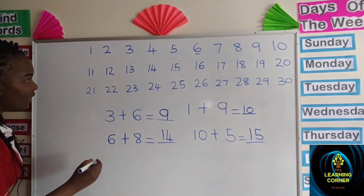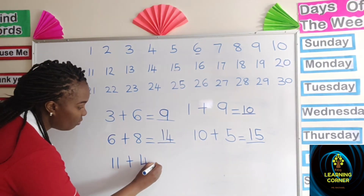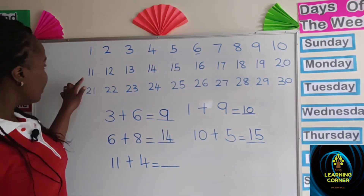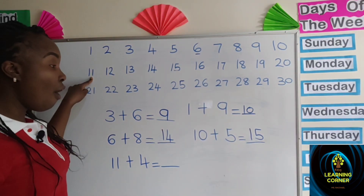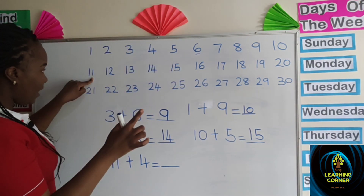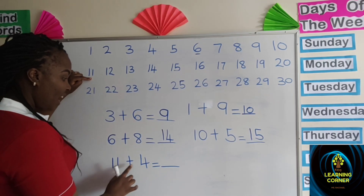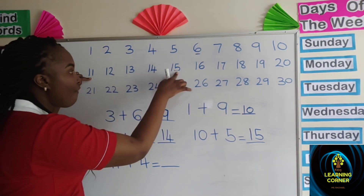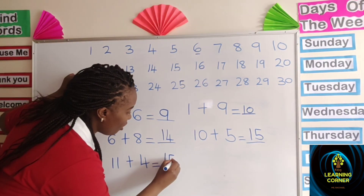Let us try another one — eleven plus four. Very simple! Look at the chart. Where is number eleven? Number eleven is here. How many times are we going to count forward? Four times. So I start here: one, two, three, four. I point at number eleven because it is the starting number, then I count four times forward. Eleven plus four equals fifteen, because we stopped at fifteen when we counted four times forward.